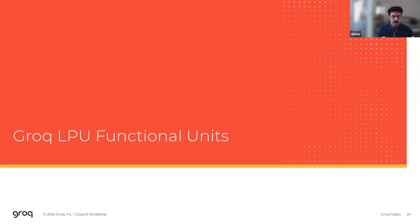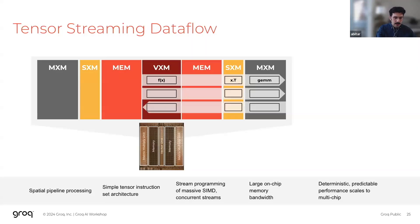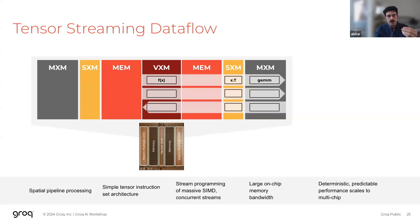Now that we've looked at the architecture at a macro level, let's dive into some of the functional units. The LPU is in effect a very large vector processor, where the unit of communication between functional units as well as the unit of execution is the vector. In the first generation LPU, the size of this vector is 320 elements. As a program executes, vectors of data flow across the different functional units via the stream registers, with a given functional unit able to grab data off a stream register, perform computation, and put the result back onto the stream register to continue flowing across other functional units.